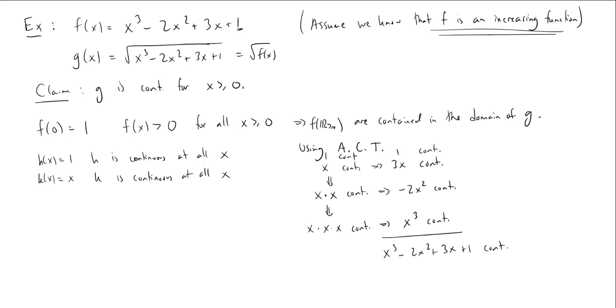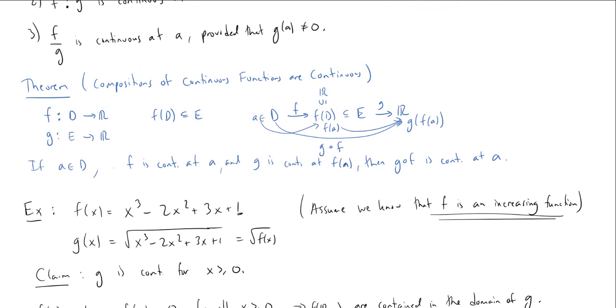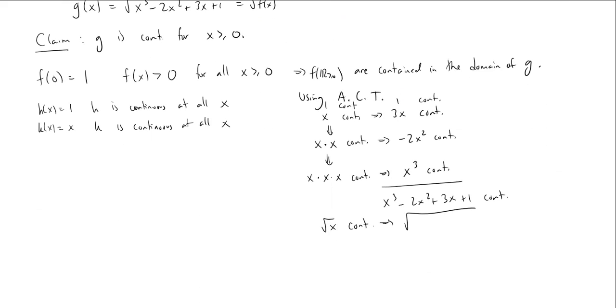But we already showed in the previous video that the square root function is continuous. So the square root function is continuous. And so then, by our second theorem, showing that compositions of continuous functions are continuous, this implies that the square root of x cubed minus 2x squared plus 3x plus 1 is continuous, because I'm composing two different continuous functions. And there we go. Of course, this was our g. So as long as this made sense, and it does when x is at least 0, we have continuity.